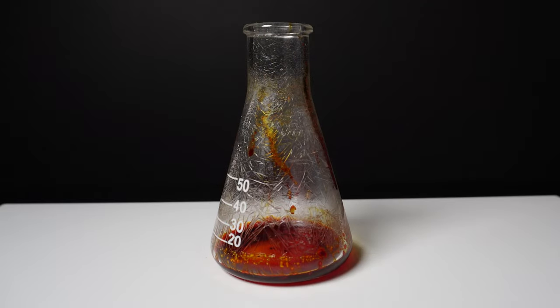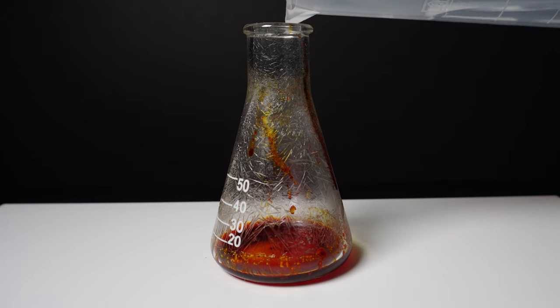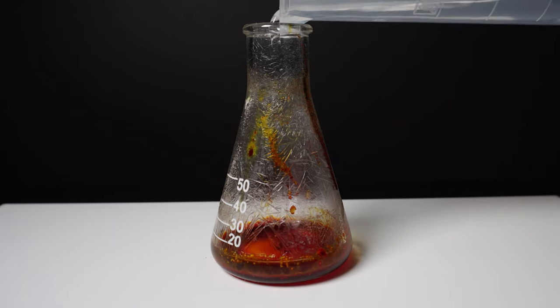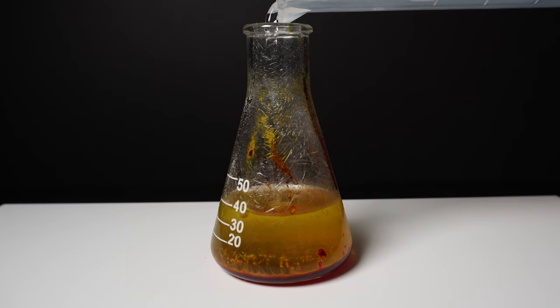Our next step will be to dissolve the fluorescein, and we start by adding water. Fluorescein is not too soluble in water, so only a small amount dissolves, which is the yellowish color that we see.